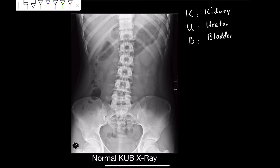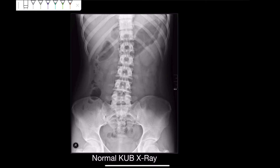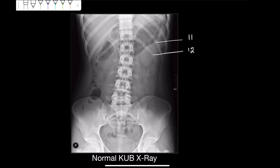If we look into this x-ray, the first structure we should be targeting is the bones. I am interested in looking at the lower ribs — specifically rib number 11 and rib number 12. After localizing those ribs on both sides, then I need to look into the vertebrae, particularly the lumbar vertebrae.